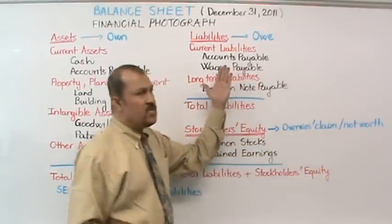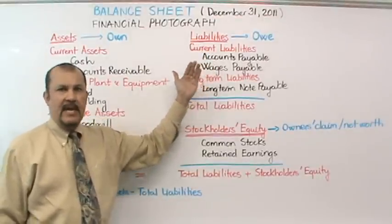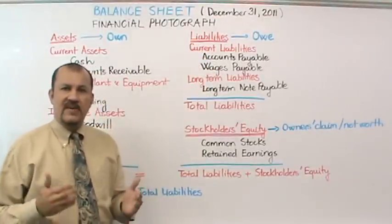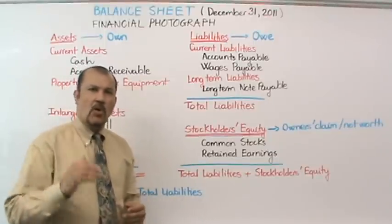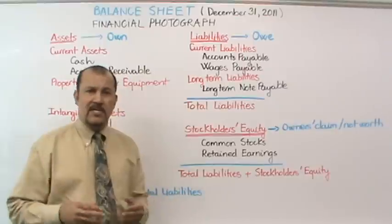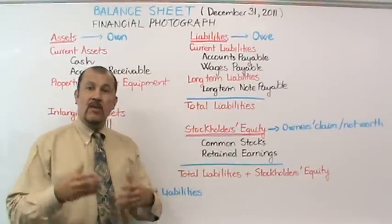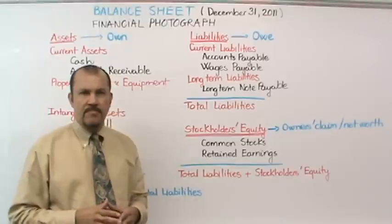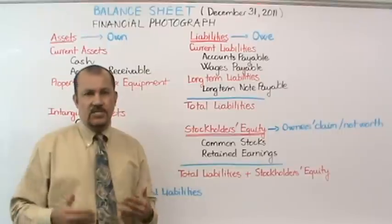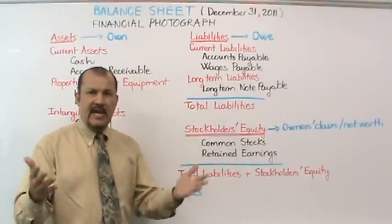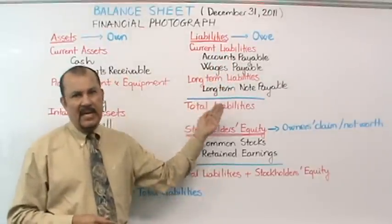The next section is liabilities. A one-word definition of a liability is something that the company owes. Most of us owe things in our personal lives — student loans, a car loan, a mortgage, money owed for taxes. These are all liabilities. Similarly, a company has various types of liabilities, one of which is accounts payable.